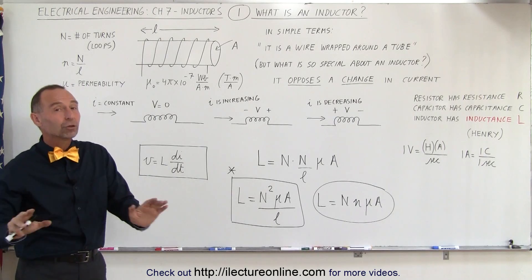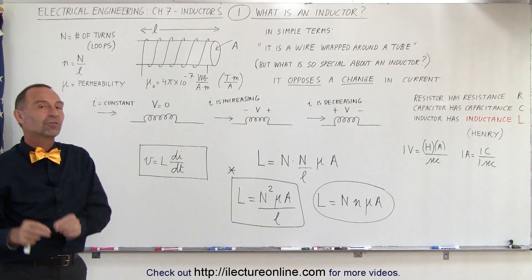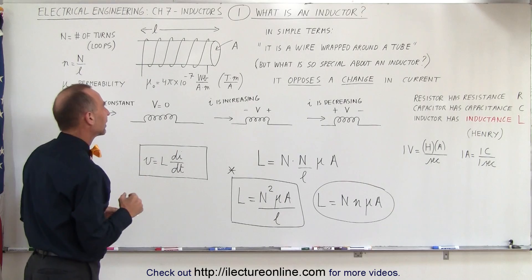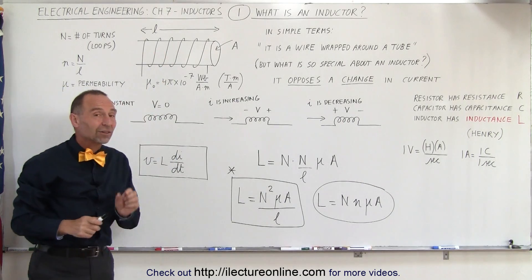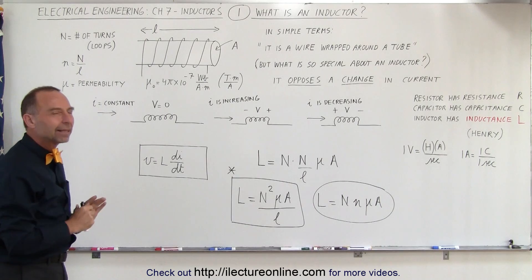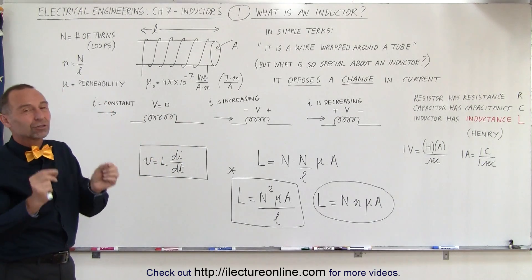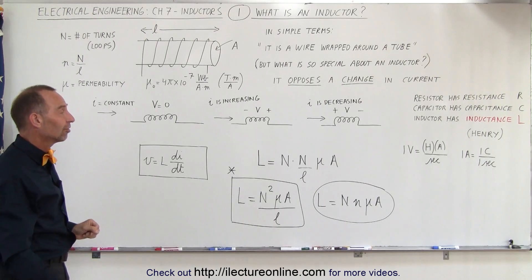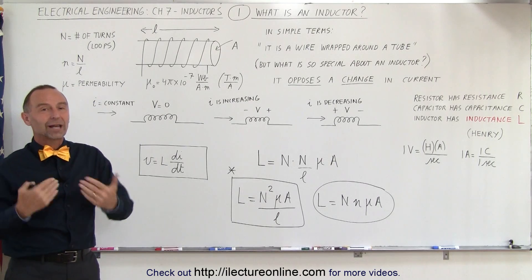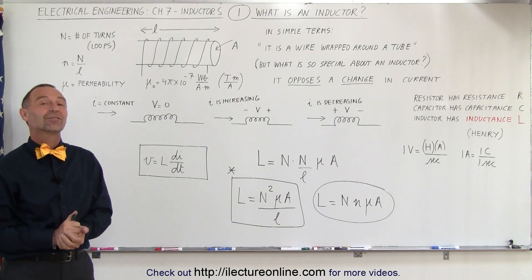Inductors always have voltage across them only if there's a change in current; the voltage will be zero if there's no change in current. One more thing: since the inductor is made out of wire, and all wires have a small amount of resistance, all inductors have a small amount of resistance as well. We'll talk about that later. So now you know what an inductor is, and we'll do a lot of videos on inductors to show how we use them, how we add them, how we use them in circuits, and so forth.